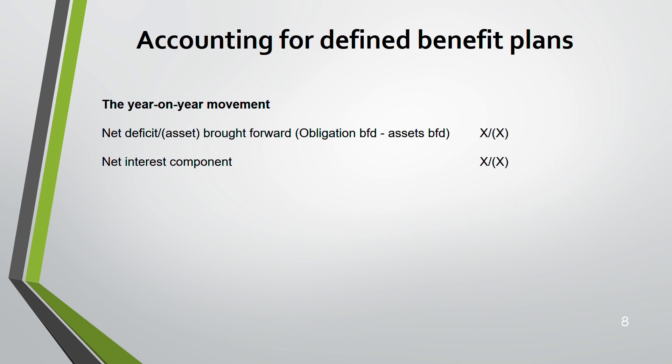The pro forma items are: net interest component (add to opening balance using the given percentage), service cost (also add — goes to P&L), contributions into the plan (always a deduction, regardless of whether it's an asset or liability position), and benefits paid (no impact — do not add or deduct).